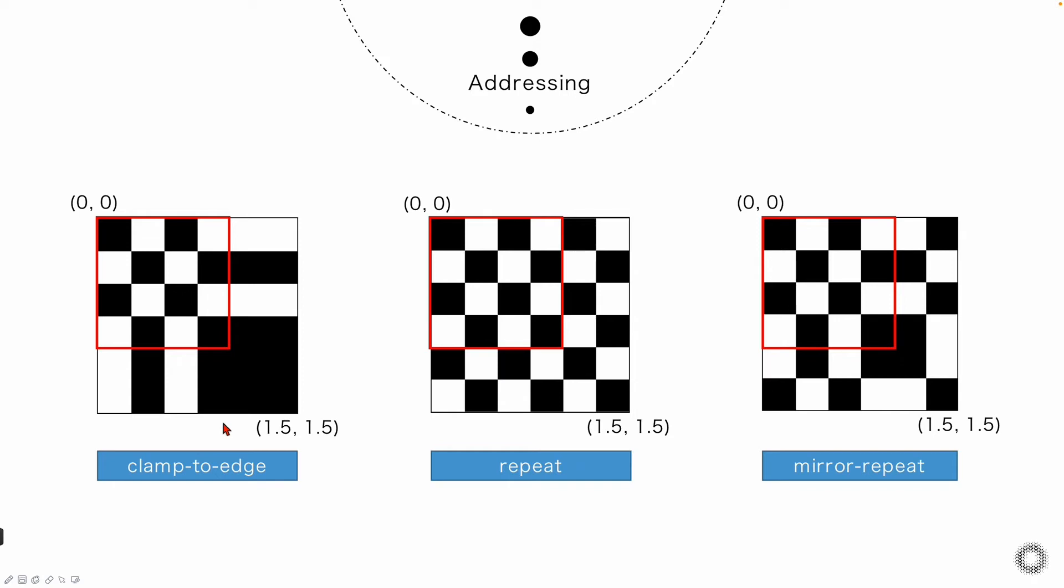And the whole texture effect at the end looks like this. Besides, WebGPU also provides another two configurations. For example, repeat, which means the part beyond 1,0 will repeat original pattern. And the other one is mirror repeat. As the name suggests, we will do a mirror repetition. And this is the final effect. In practice, we can set the horizontal and the vertical direction separately to use different address configuration.